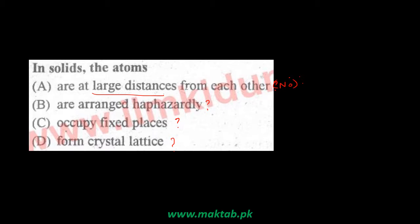Reviewing properties of solids: atoms are not at large distances from each other — in liquids and gases atoms are closer. Are they arranged haphazardly? In crystalline solids no, in amorphous solids yes — so this is not true for all solids. Do they occupy fixed spaces? Yes — in solids atoms always occupy fixed spaces; this is a necessary condition for every solid. Do they form a crystal lattice? Not necessarily. So the correct general statement is that solids occupy fixed spaces — Option C.